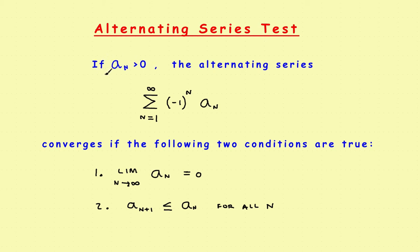If you have a positive sequence, you can form an alternating sequence by putting a negative one to the n power in front of it, and this becomes an alternating sequence. This alternating sequence will converge if two conditions are met. Before we get to those conditions, let's take a quick graphical look at what this alternating series thing is all about.